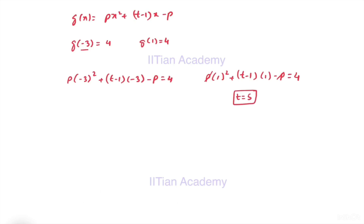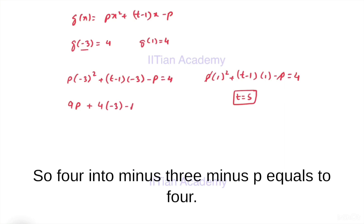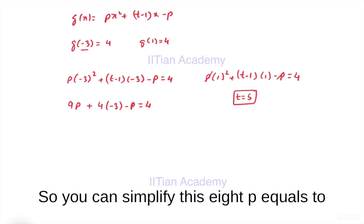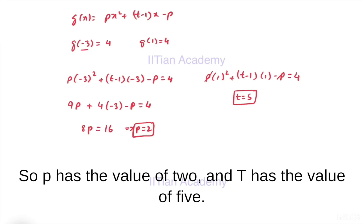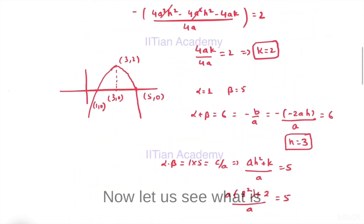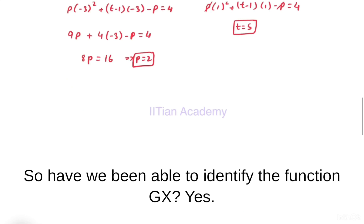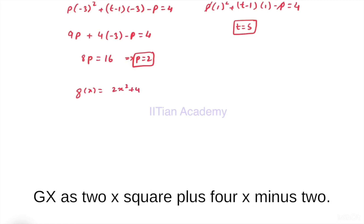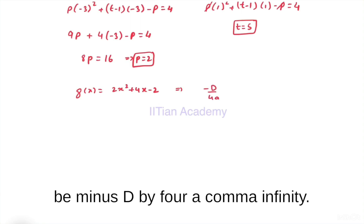From z(1) = 4, we get t - 1 - p = 4, which gives t = 5 + p. Substituting into the equation from z(-3) = 4 and solving, we get 8p = 16, so p = 2. With p = 2, t = 5. The function g(x) becomes 2x² + 4x - 2. Since a = 2 is positive, the parabola opens upward and the range is [-d/4a, ∞).